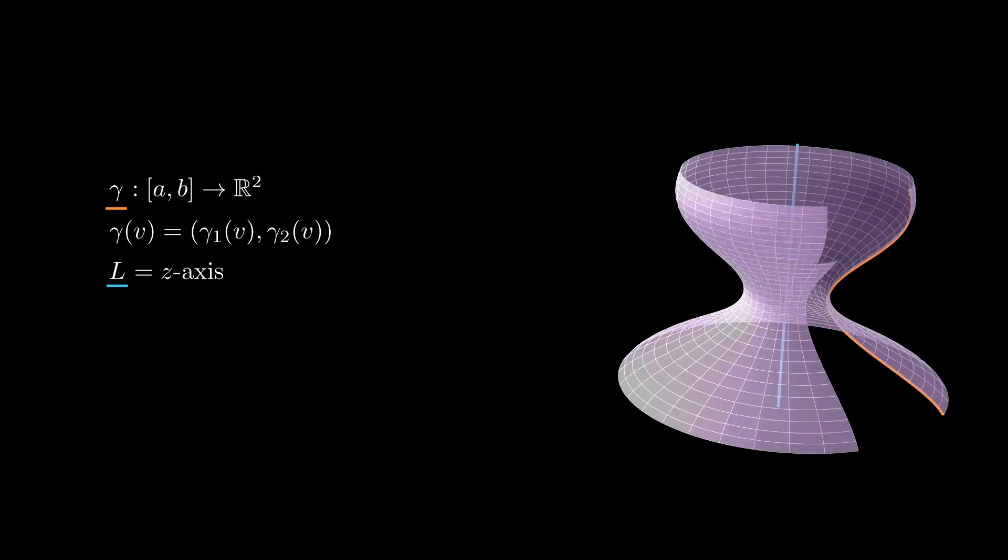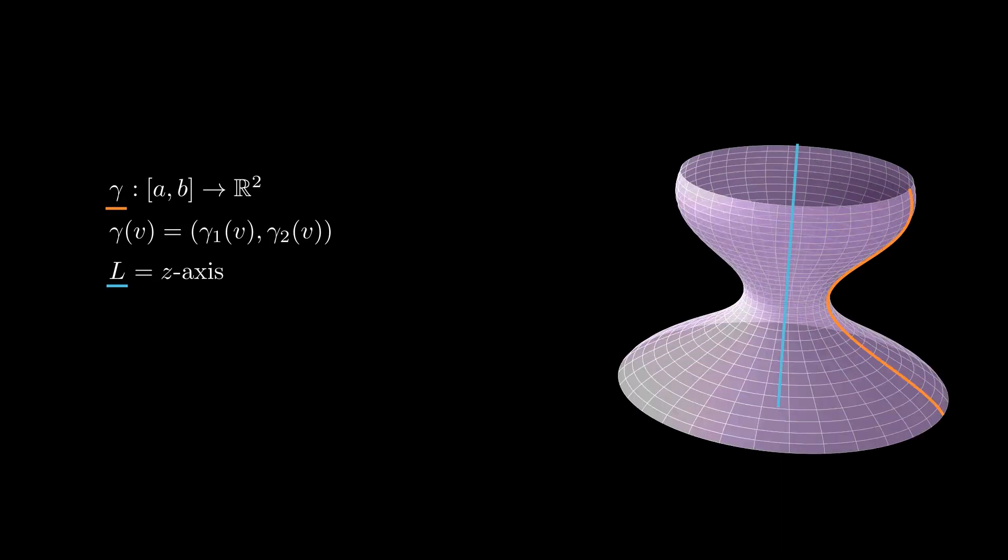Of course, after updating our coordinate system, we can assume that gamma lives in the xz-plane and L is the z-axis.